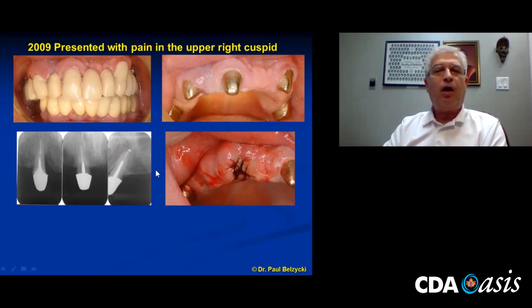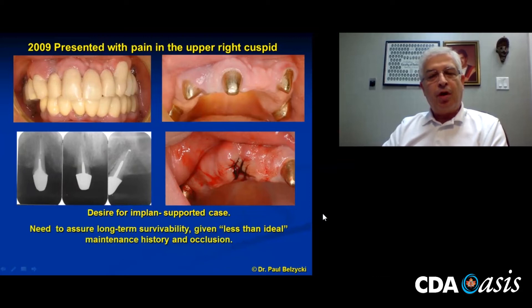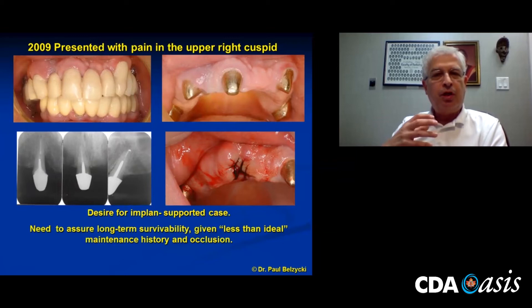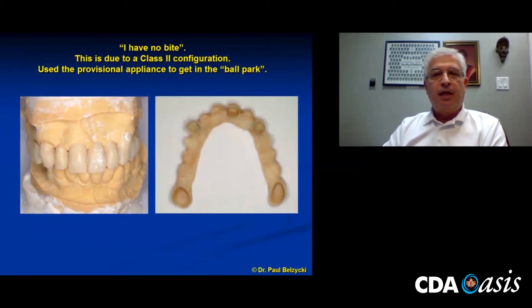The desire for an implant-supported case was there. We needed to assure long-term survivability, given the less-than-ideal maintenance history and his occlusion. He was very much Class II — prominent maxilla and a smaller lower jaw, almost as if the lower teeth are just enveloped by the upper teeth. It was difficult to find the bite. He did not want to wear a full denture at any time. In his words, 'I have no bite; this is going to be difficult.'